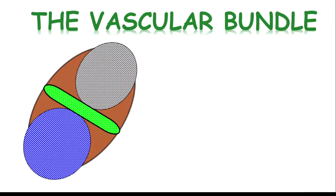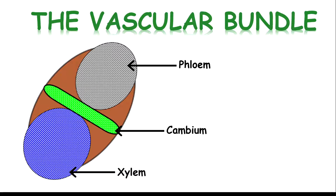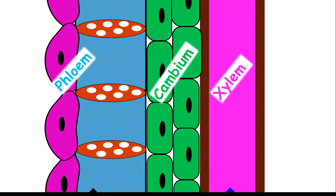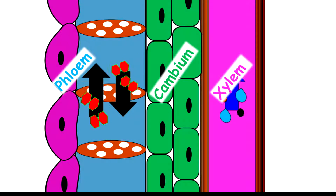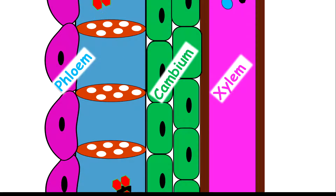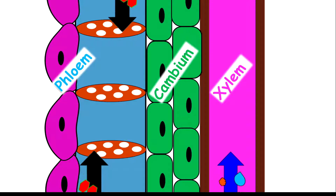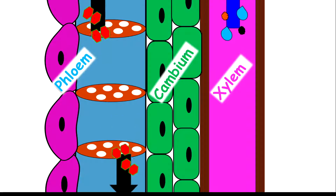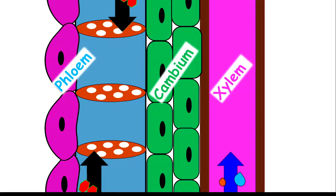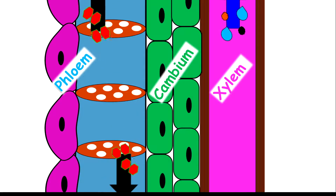If you look at one of these vascular bundles in more detail, you will see the phloem on the outermost part, the xylem on the innermost part, and separated by a cambium. Looking at the entire structure, you can see the direction of flow of substances and also the arrangement of the phloem, the xylem, and the cambium.